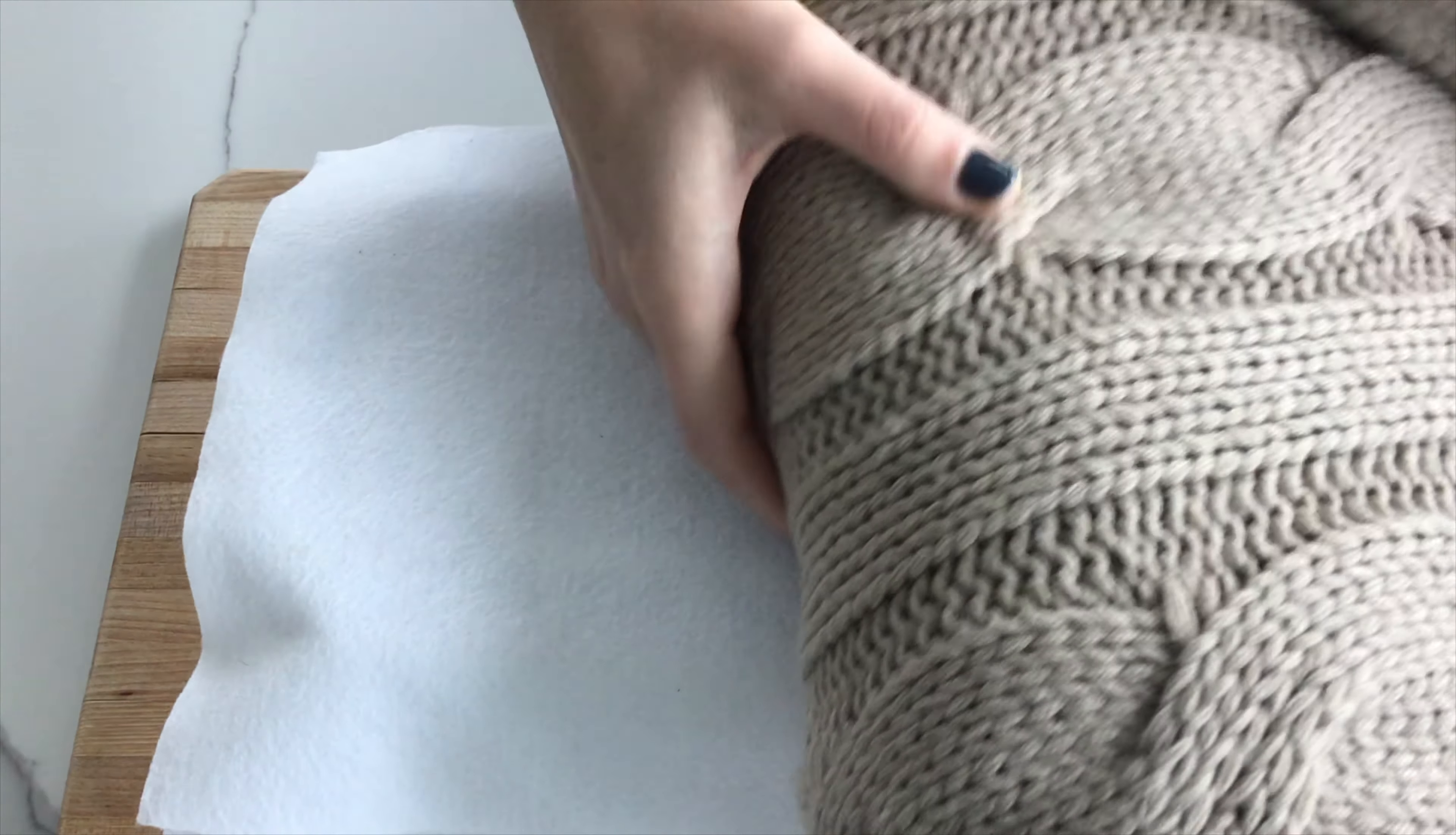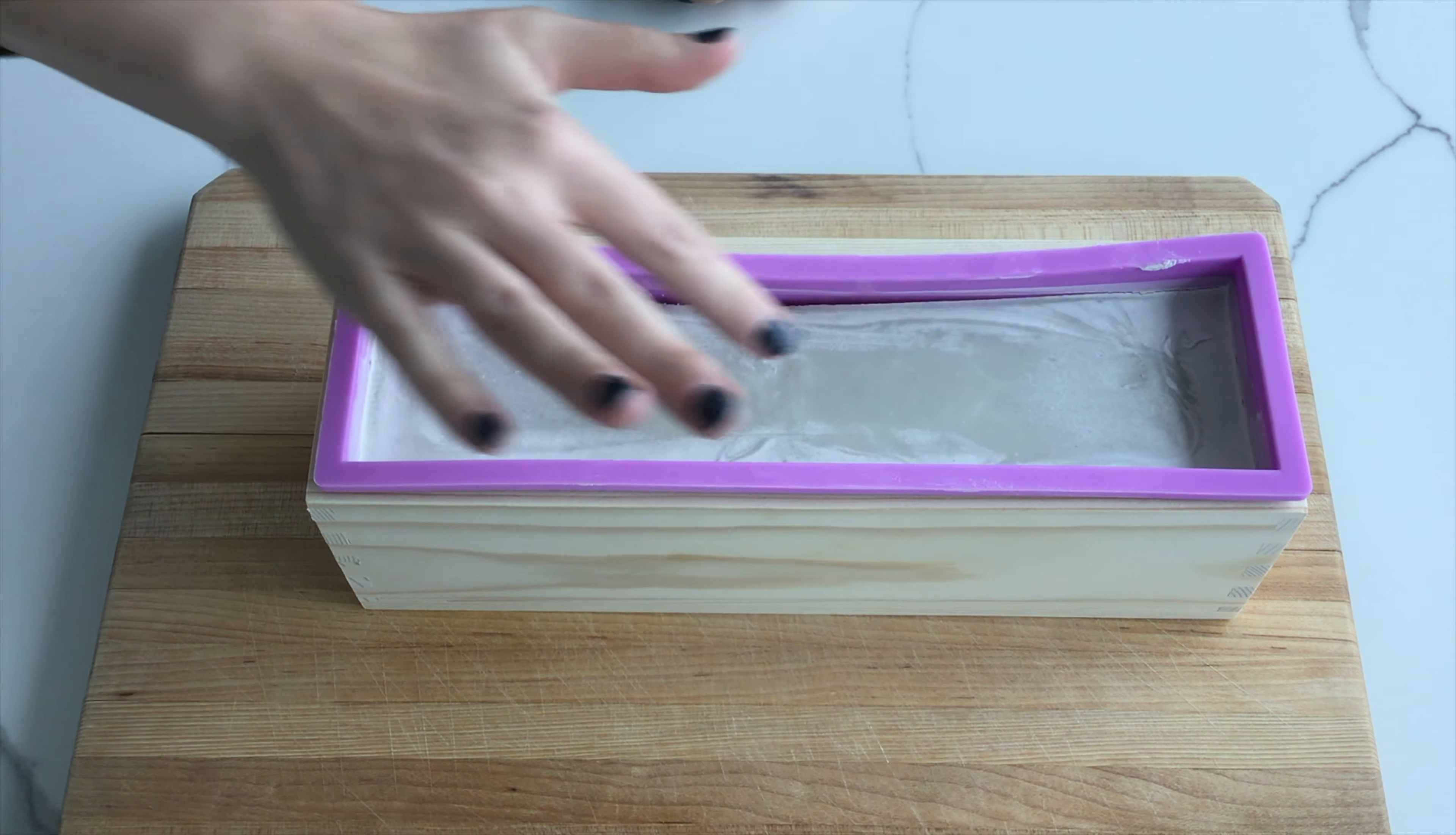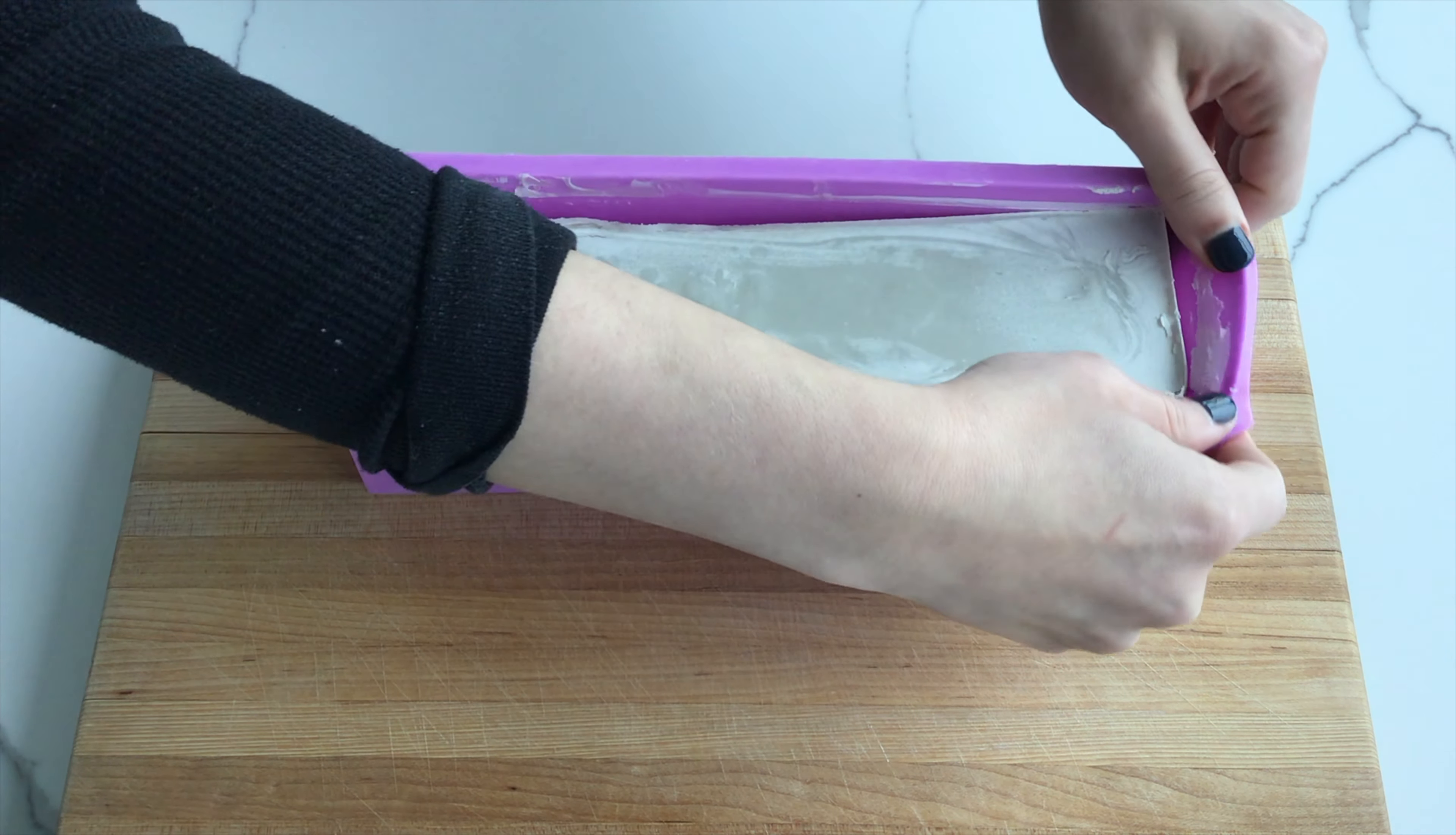After 24 hours has passed, check your soap. If it's soft to the touch, let it sit another 24 hours. If it's solid and pulls away from the silicone, you can remove it from the mold.